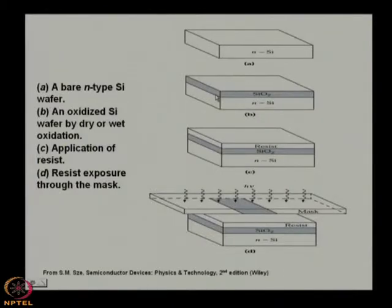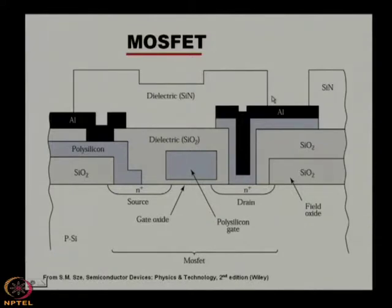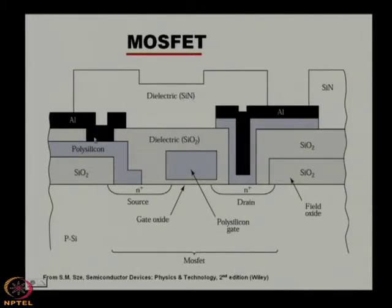For the formation of a P-N junction starting from an N-type silicon wafer, the first step is to grow a layer of silicon dioxide on it. In MOSFET fabrication, there are many kinds of dielectric, polysilicon, and oxide films, including gate oxide, polysilicon gate, field oxide, silicon nitride, and SiO₂.